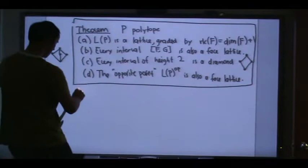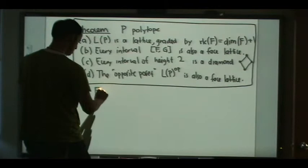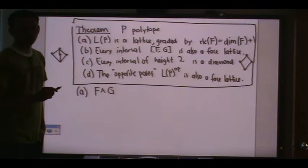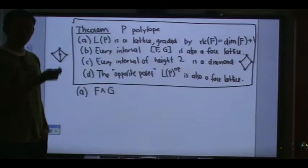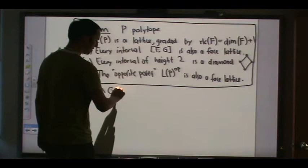Let me give you a sketch of the proof. Why is L(P) a lattice? What is the meet of two faces? You would hope it's the intersection, but you have to check: is the intersection of F and G actually a face? Is the set of faces closed under intersection?